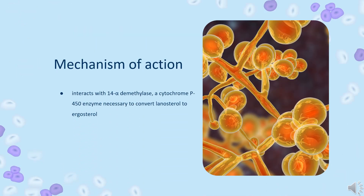Mechanism of Action: Itraconazole interacts with 14-alpha-demethylase, a cytochrome P450 enzyme necessary to convert lanosterol to ergosterol. As ergosterol is an essential component of the fungal cell membrane, inhibition of its synthesis results in increased cellular permeability, causing leakage of cellular contents. Itraconazole may also inhibit endogenous respiration, interact with membrane phospholipids, inhibit the transformation of yeasts to mycelial forms, inhibit purine uptake, and impair triglyceride and/or phospholipid biosynthesis.